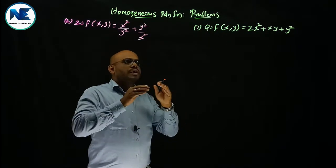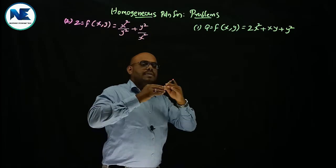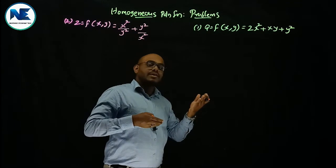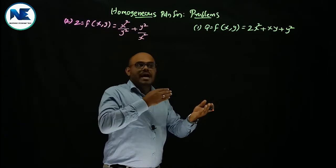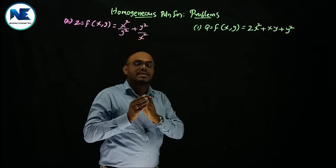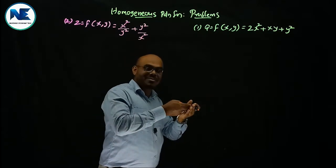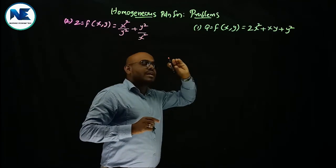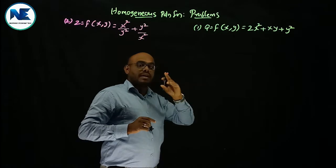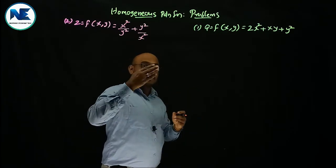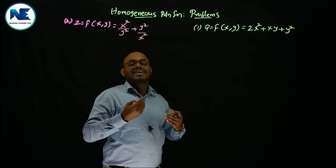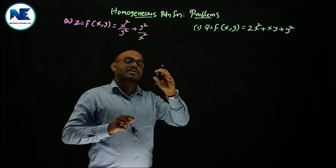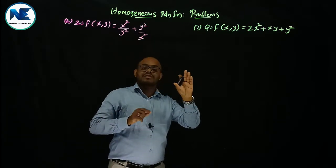To test for homogeneity, we multiply all inputs by a real constant — lambda, also called k. We then try to factor out that constant. If we can factor it out, it is a homogeneous production function; if not, it is non-homogeneous. If the power is 1, it is linearly homogeneous. Greater than 1 means increasing returns to scale; less than 1 means decreasing returns to scale; equal to 1 means constant returns to scale.